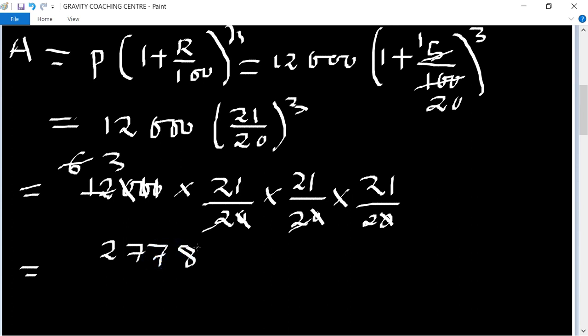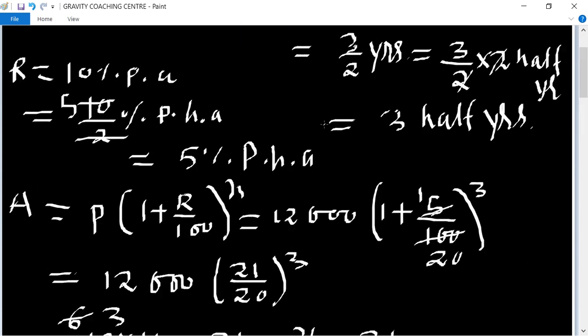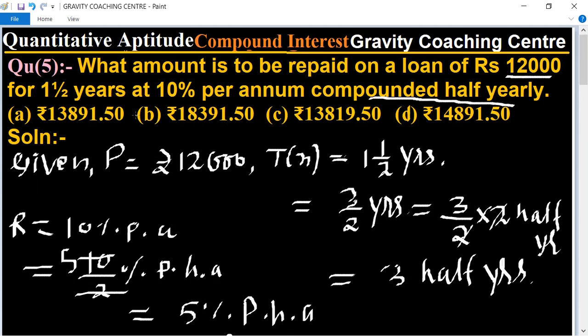Equals 27783 upon 2, equals 13891.50, which is the required answer. So option 13891.50, option B is the correct answer.